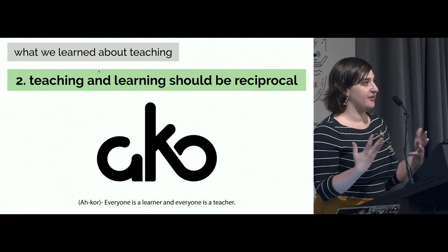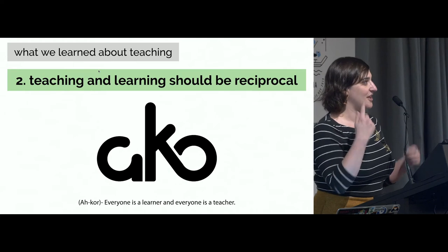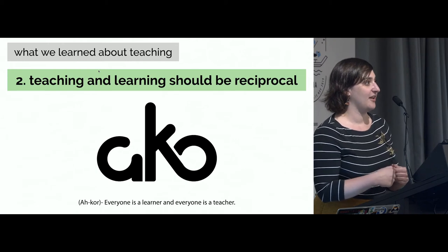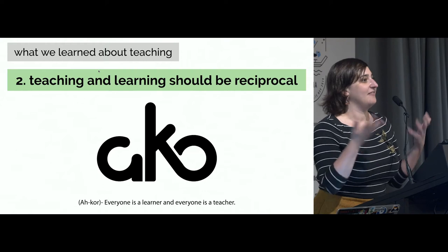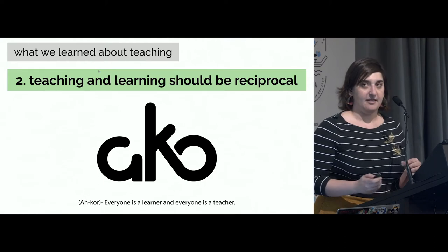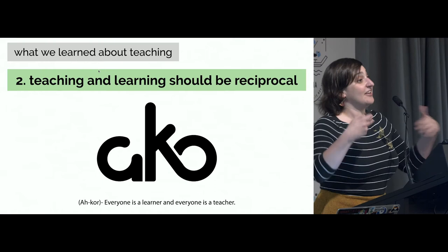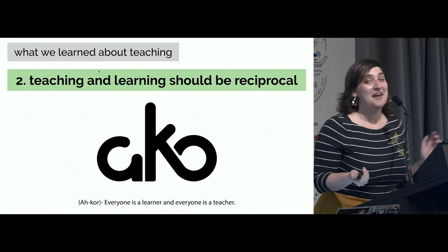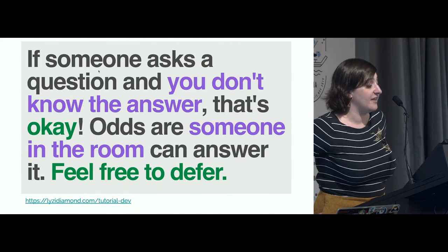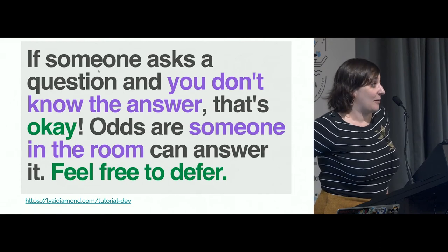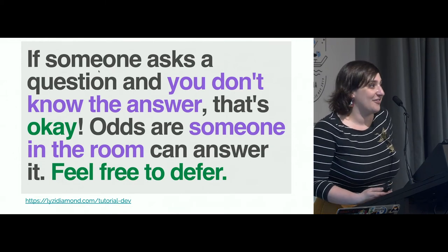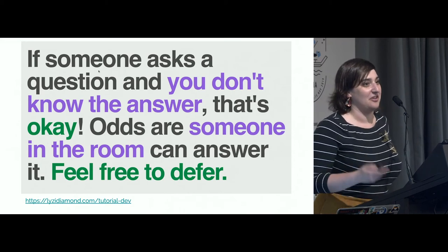The next thing we learned is that teaching and learning should be reciprocal. I met a lovely person named Nev who told me about the Māori concept of Ako — a dynamic form of learning describing a teaching and learning relationship where the educator is also learning from the student in a two-way process, grounded in the principle of reciprocity. Beginners make the best teachers because of conscious competence: if you know what you know, you do a better job of explaining it. If you don't, you end up with an expert using vocabulary a layman won't understand. So MapTime is rooted in collaboration — if someone asks a question and you don't know the answer, someone in the room probably does, and you get to give them the opportunity to go from being a student to being a teacher.